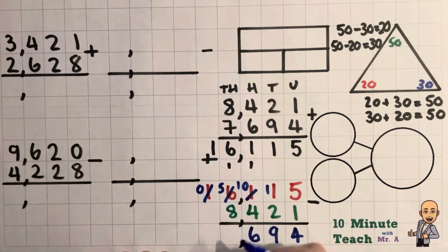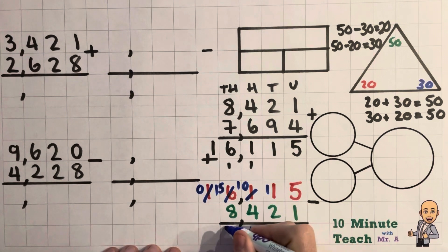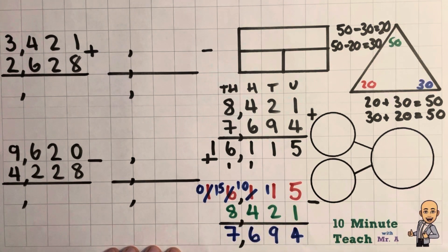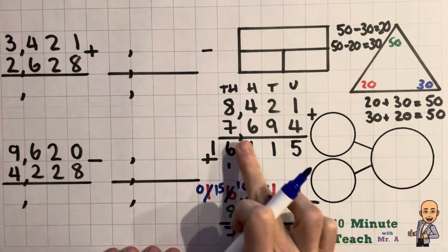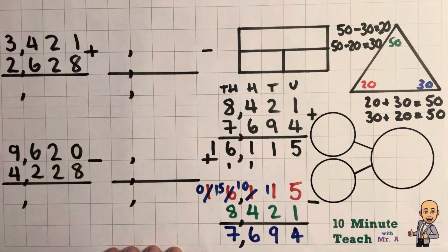And we'll get rid of that one because we have to borrow. And we are left with 7,694. And if you look actually I've checked myself there and it all works, which is fantastic. So a big pat on the back to me because I've got my answer correct.